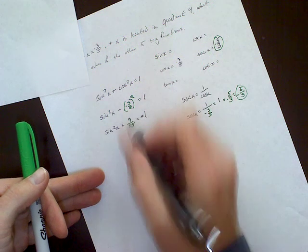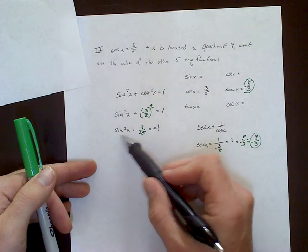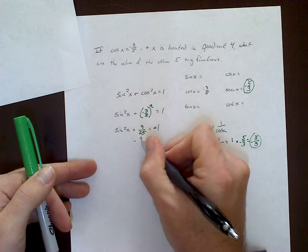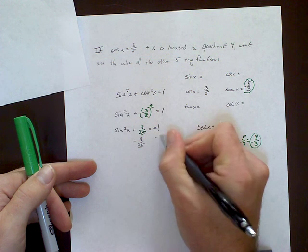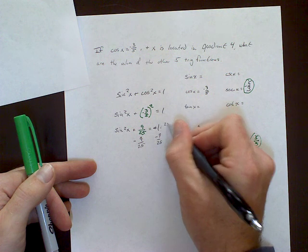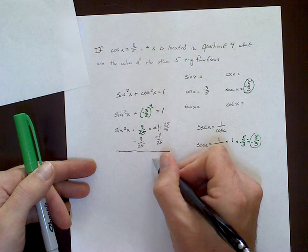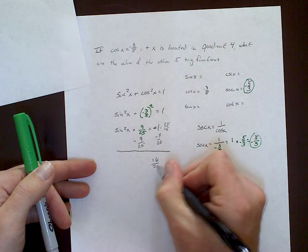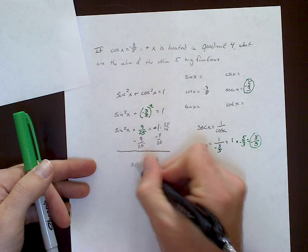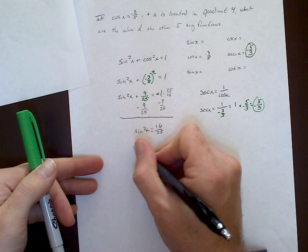So now we just need to solve for, ultimately, as you can see, we want to get the sine of x by itself. So we need to basically solve for the sine of x. So to do that, it's just simple algebra. Subtract this from both sides. Now again, because that's 1, you want a common denominator. So we could say 25 over 25, 9 minus 25 is 16 over 25, equals sine squared of x. And then, just like if you had x squared to get that square out, we take the square root of both sides.